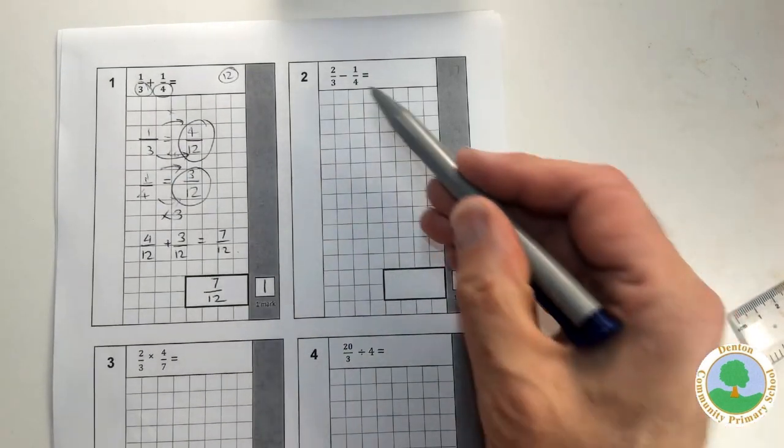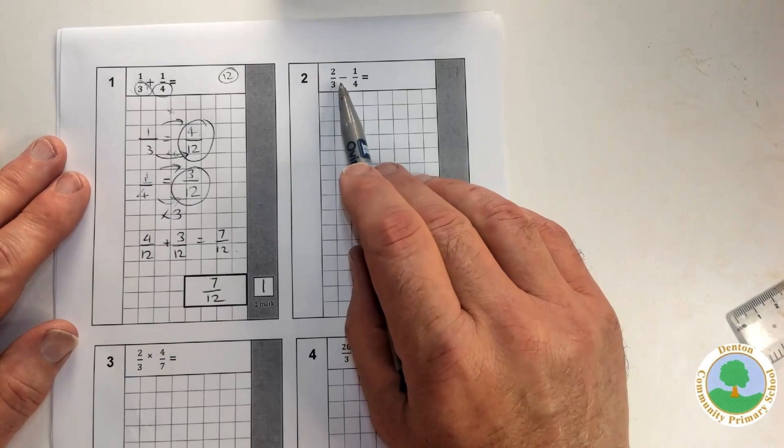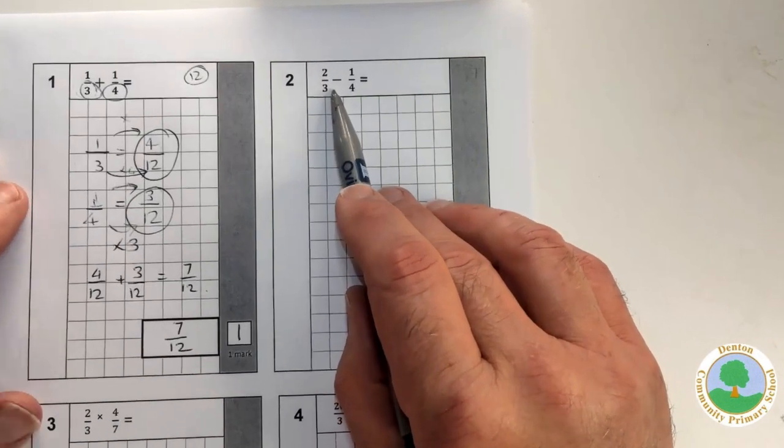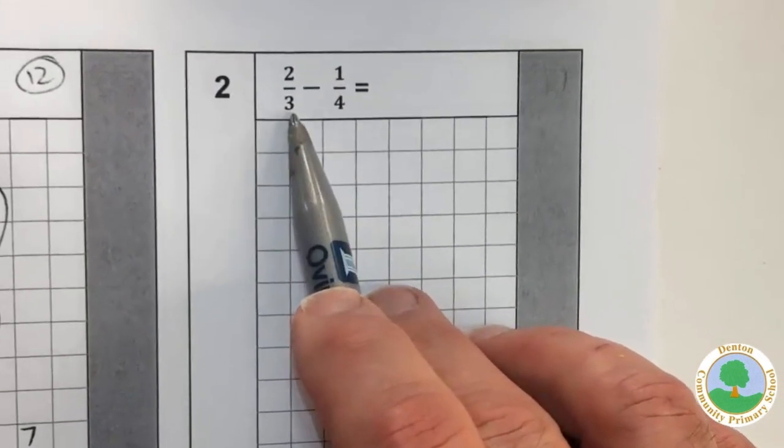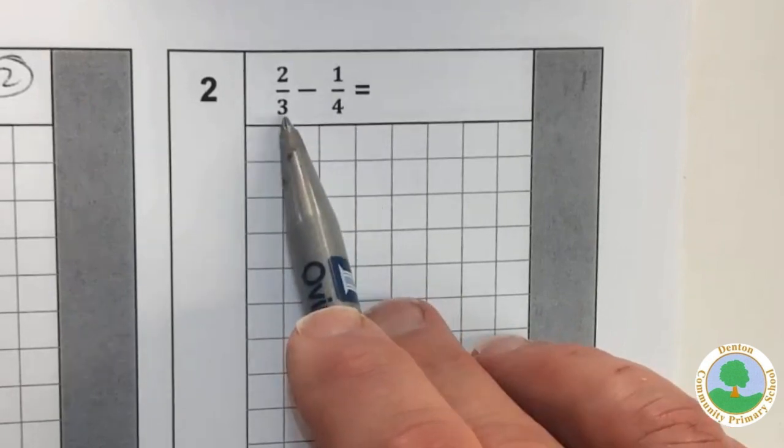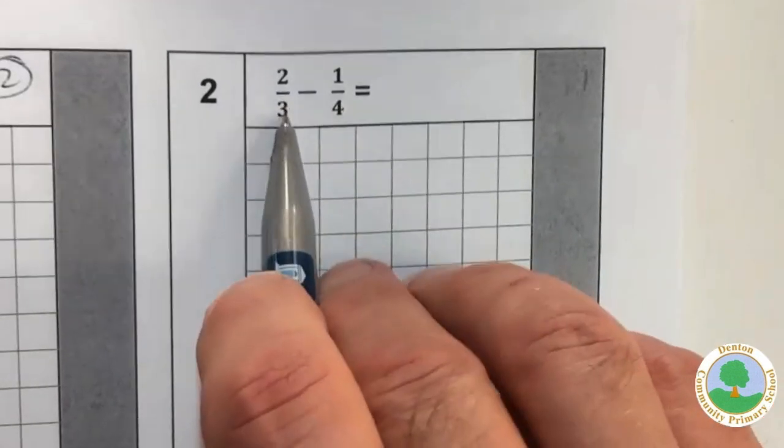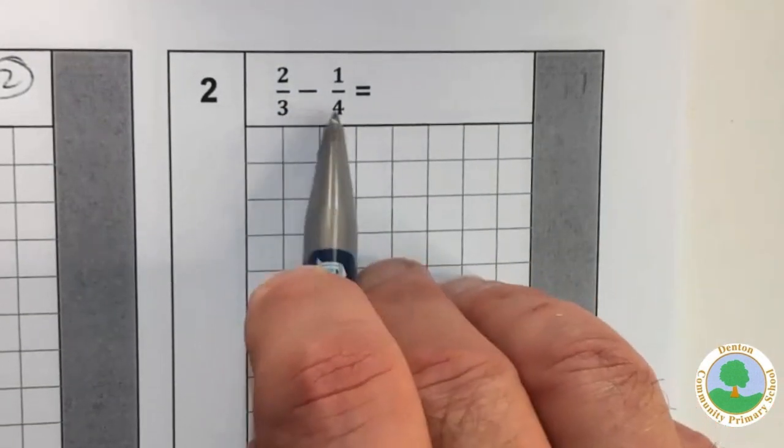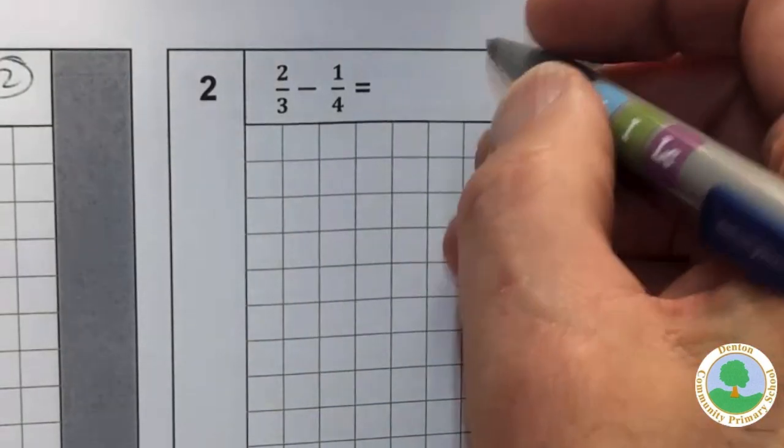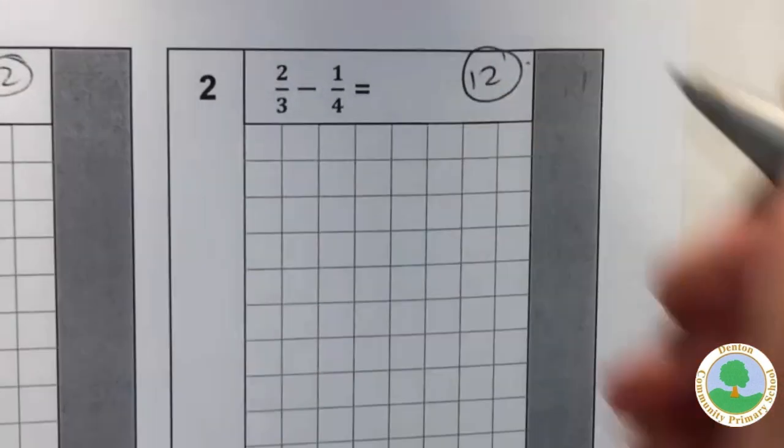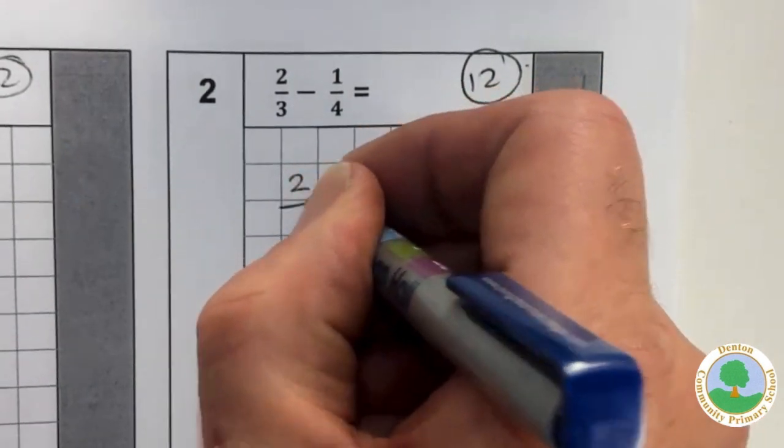Here we go. Moving on to question two. Now, same idea, but this time we've got a subtraction. You can't take fourths from thirds. They're smaller things. So again, look for the lowest common multiple of 3 and 4. The lowest common multiple of 3 and 4 is still 12.